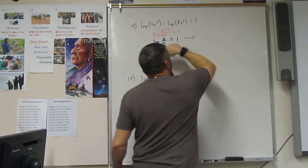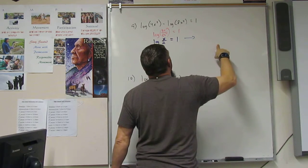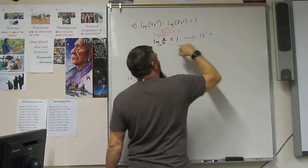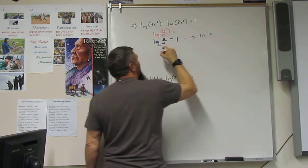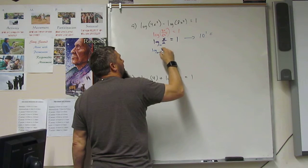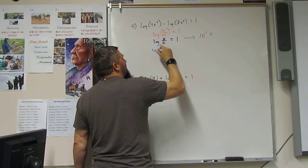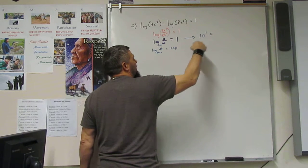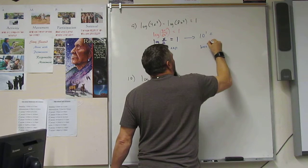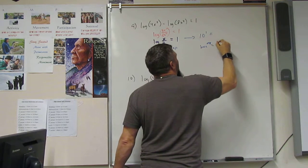So if I want to change this to exponential form, then I can have 10 to the 1 is equal to... So remember, we have the log of the base of the number is equal to the exponent. And here we just have the exponent.